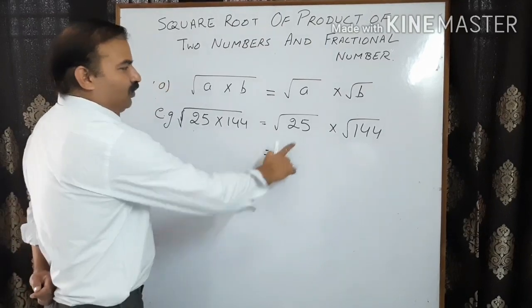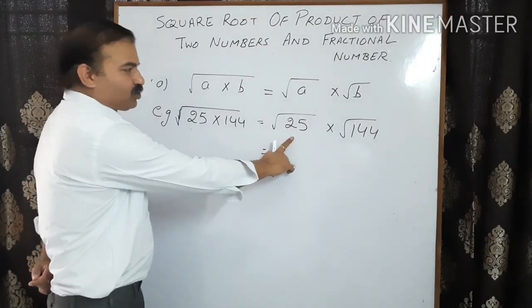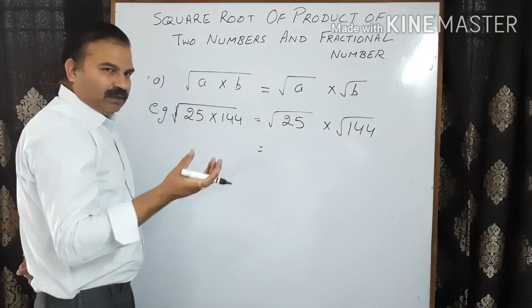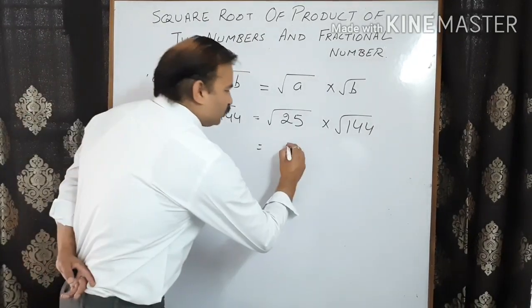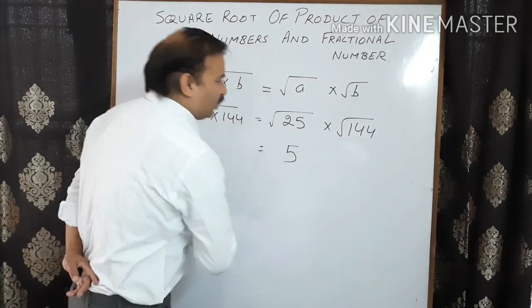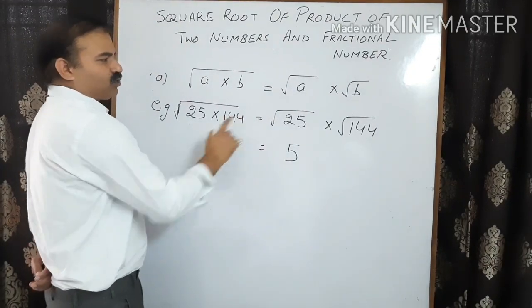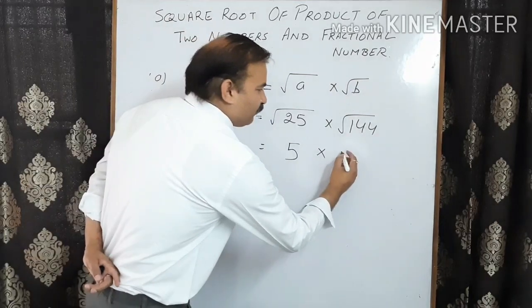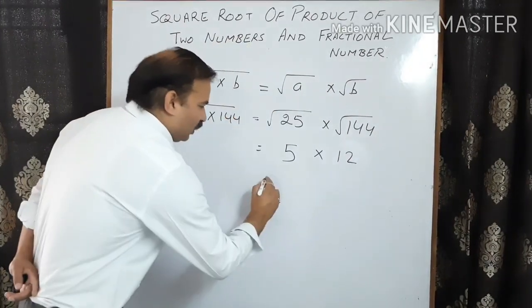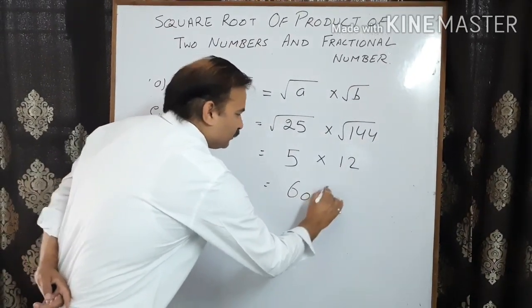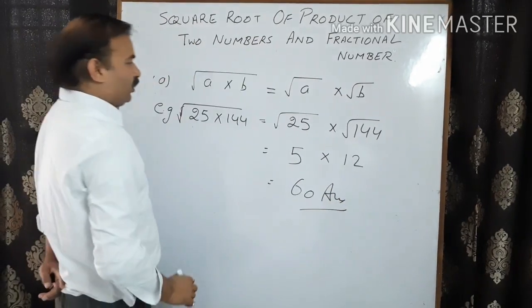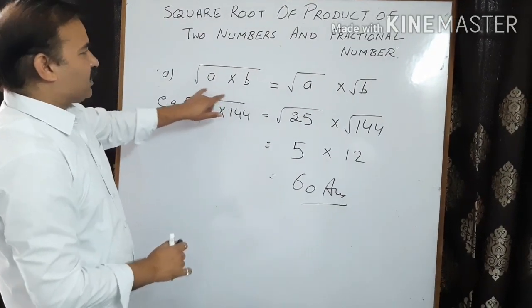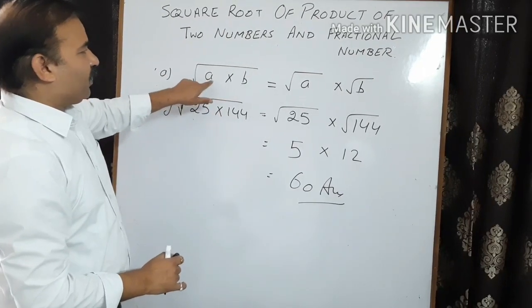Now find the square root of 25. Since the number is small, you remember that 25 is a square of 5, so the square root of 25 is 5. Multiply by the square root of 144, which is 12. So the answer will be 5 multiplied by 12, which is 60. You do not have to multiply the original numbers — that is why this formula is given.